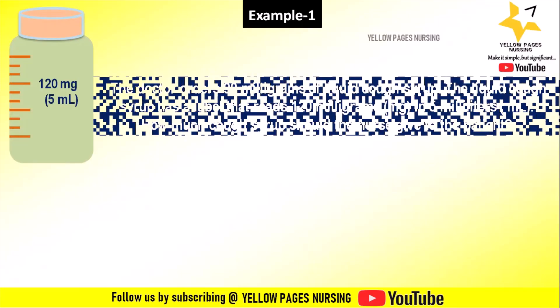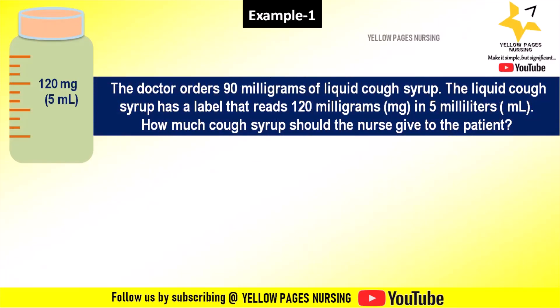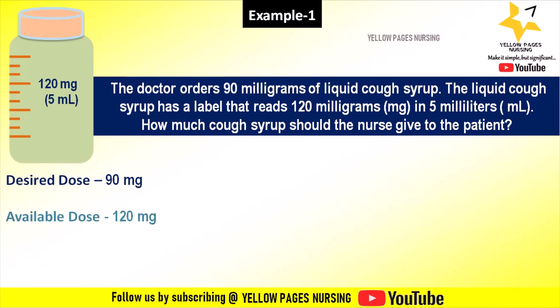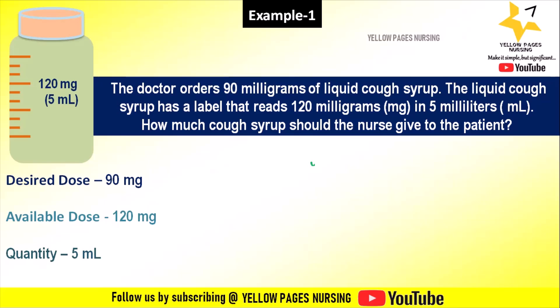Let's look at the first example. The doctor orders 90 milligrams of liquid cup syrup. The liquid cup syrup has a label that reads 120 milligrams in 5 milliliters. How much cup syrup should the nurse give to the patient? Here the desired dose is 90 milligrams, available dose is 120 milligrams, and the quantity is 5 ml.